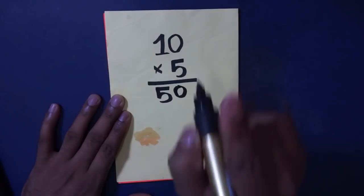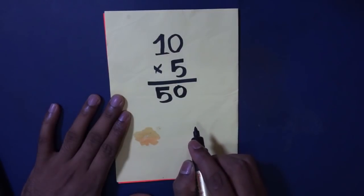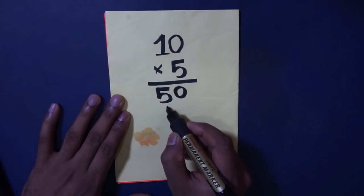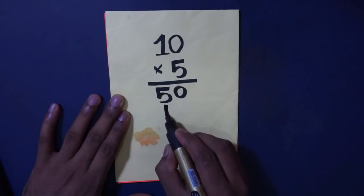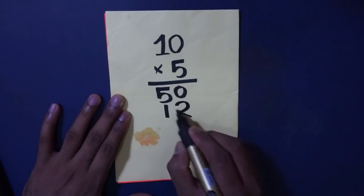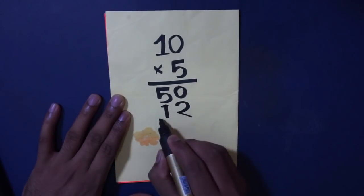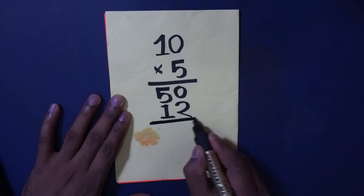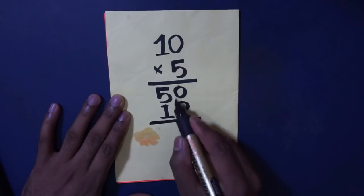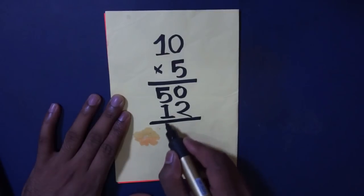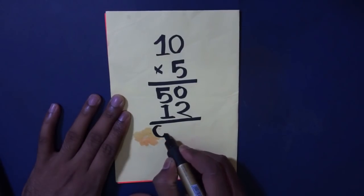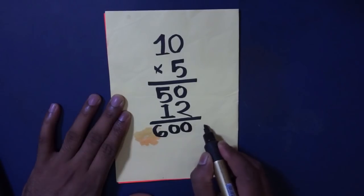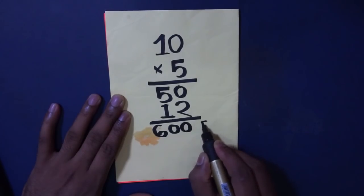Then again I tell them: can you multiply this number by 12? So if 50 you again multiply by 12, what number will come? 600. So it's exactly 600. That is the final result.